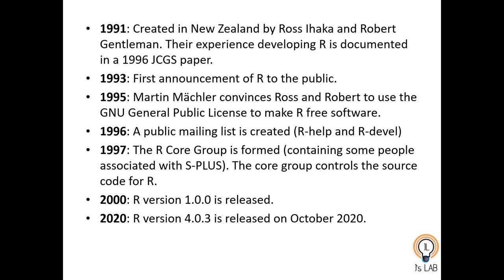The R Core Group was formed in 1997; the core group controls the source code for R. In 2000, R version 1.0.0 was released. In October 2020, version 4.0.3 was released — that is when this video was created.